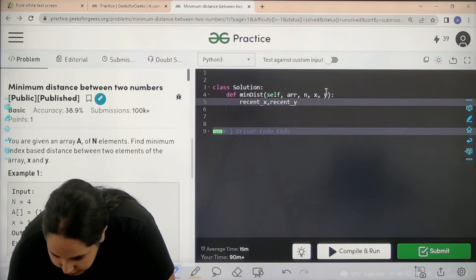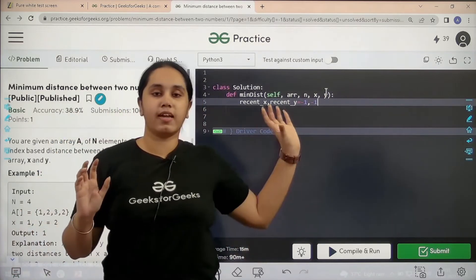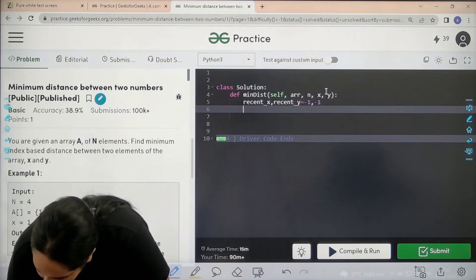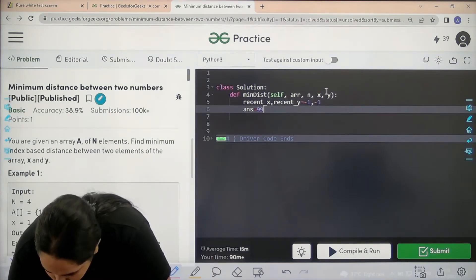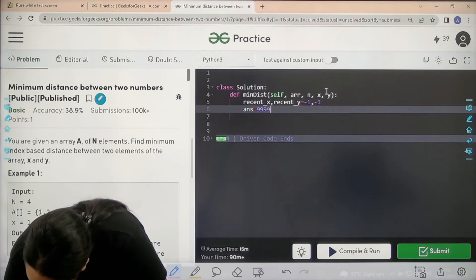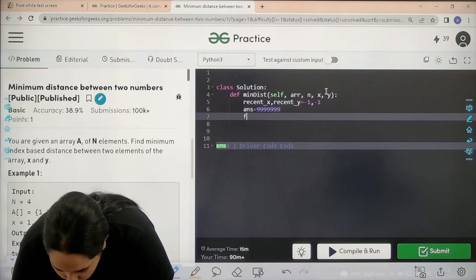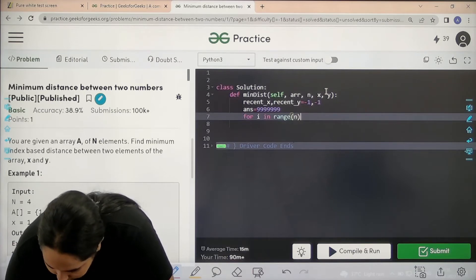This is initially -1, -1, that means if they are not found they are at the end. Next, answer equals a large number. For i in range - I am applying the range for the entire array.